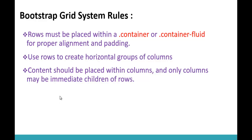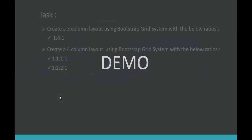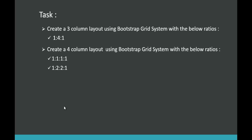Before that, I have a task assigned for the demo. We have to create a 3-column layout using Bootstrap Grid System with the ratio 1:4:1. That means 12 columns divided as 2 columns to the left, 8 columns in the middle, and 2 columns to the right. When we apply this ratio to Bootstrap Grid System, 12 columns are divided into 2, 8, and 2.